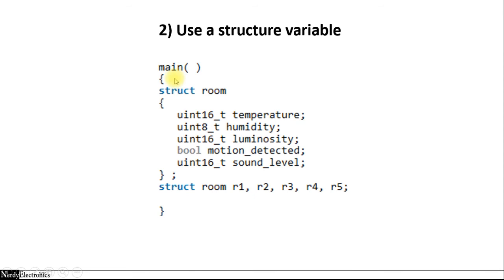In this example, we are using a structure where we define it using the keyword struct and the name of the structure is 'room'. We define the member variables of this structure: temperature, humidity, luminosity, motion, and sound. Then we create structure variables R1, R2, R3, R4, and R5. So R1 represents room 1, R2 represents room 2. If we read the sensor of room 2, we know the temperature belongs particularly to room 2 and not any other room.